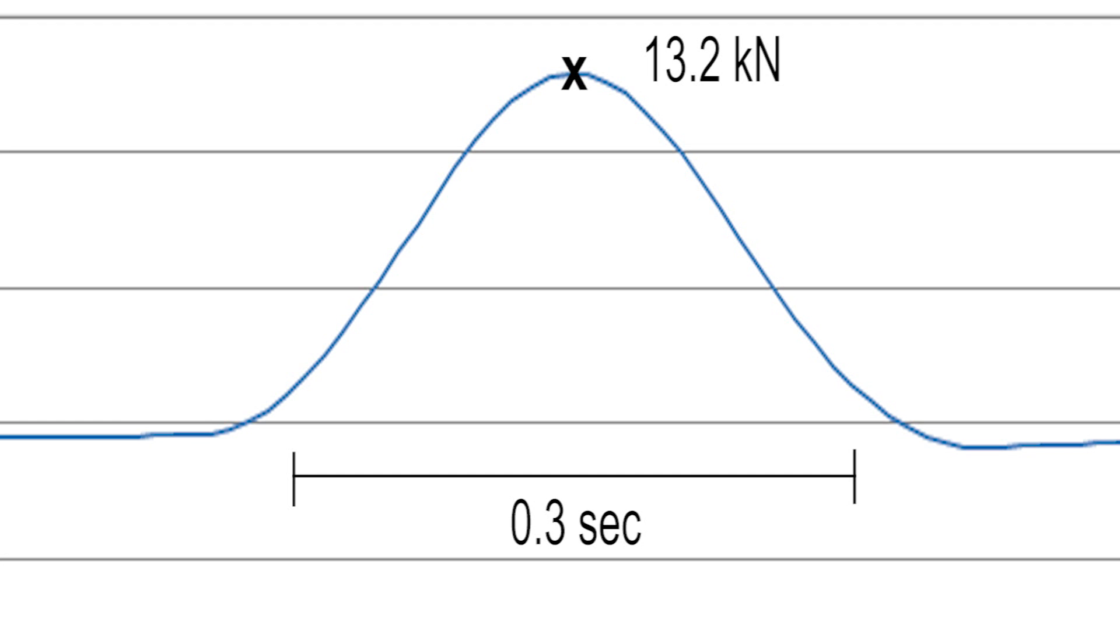If the force curve is measured with bad time resolution, the peak forces will be missed. If you want to register the peak forces in your slackline when bouncing, you should put your force measurement device on about 100 Hz. That means it measures 100 values every second.